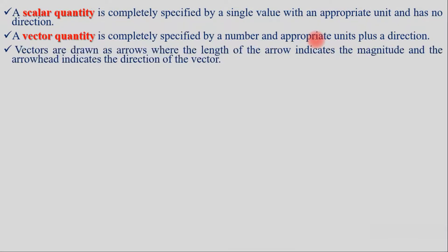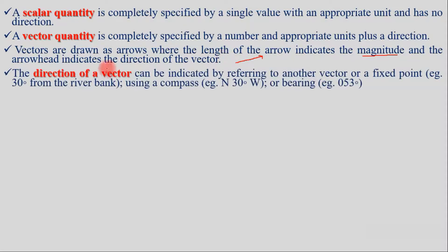Vectors are drawn as arrows. The length of the arrow represents the magnitude of the vector, and the arrowhead indicates the direction of the vector.